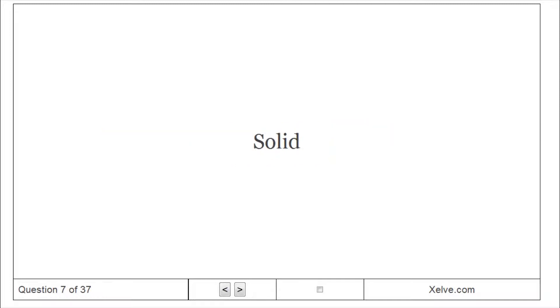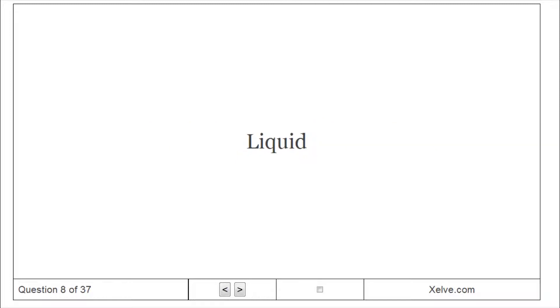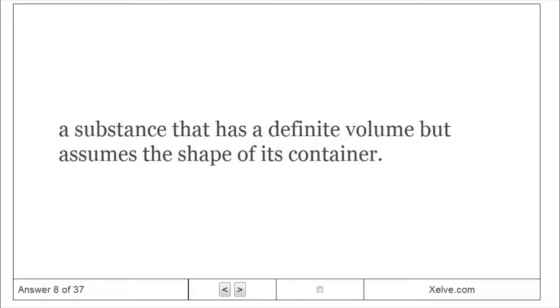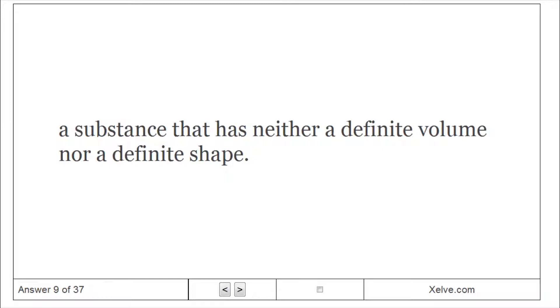Solid: A substance that has a definite shape and volume. Liquid: A substance that has a definite volume but assumes the shape of its container. Gas: A substance that has neither a definite volume nor a definite shape.